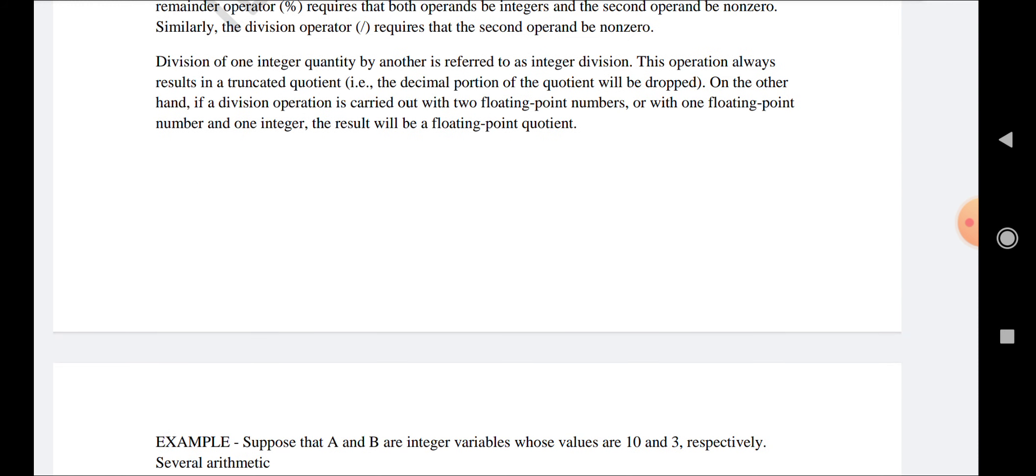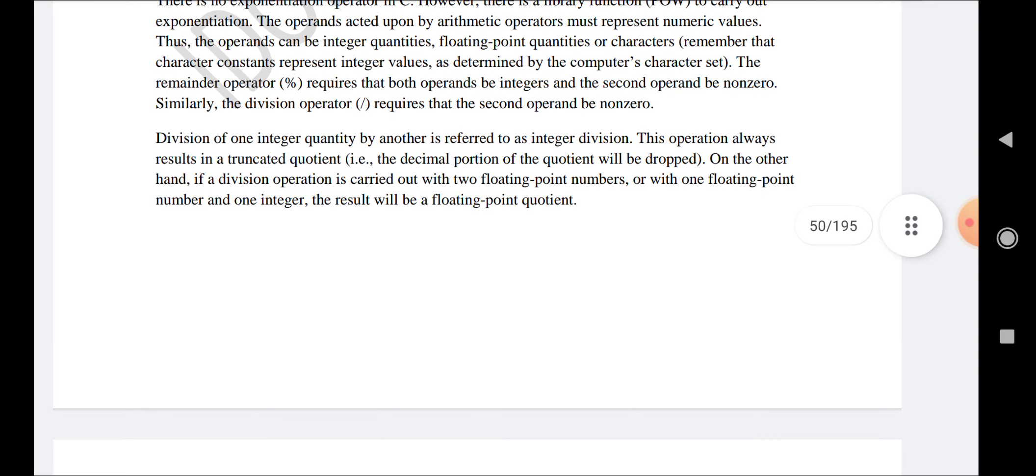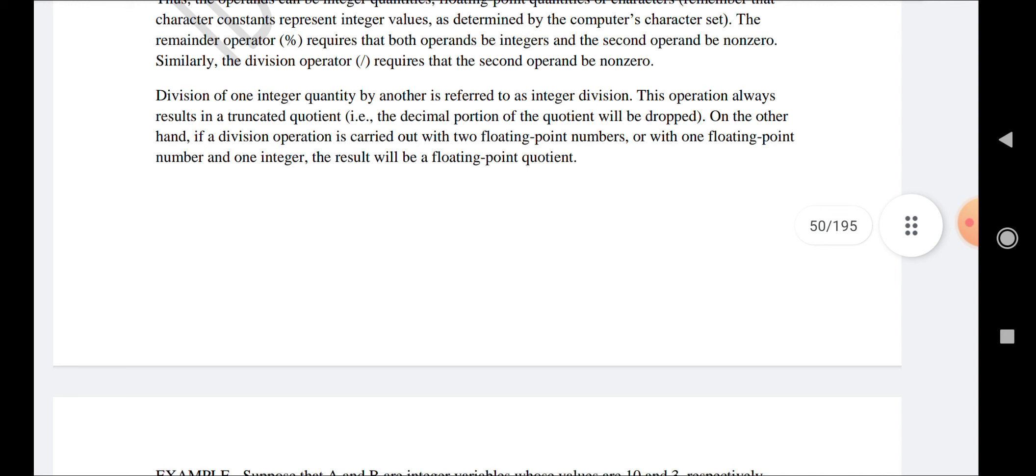Division of one integer quantity by another is referred to as integer division. This operation always results in a truncated quotient. On the other hand, if a division operation is carried out with two floating-point numbers or with one floating-point number,